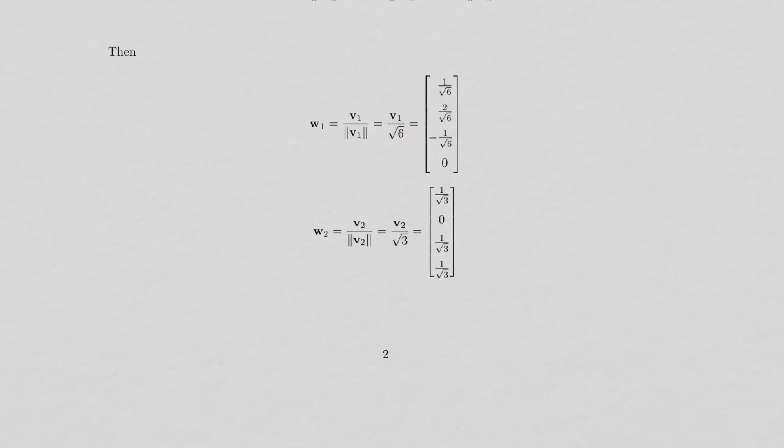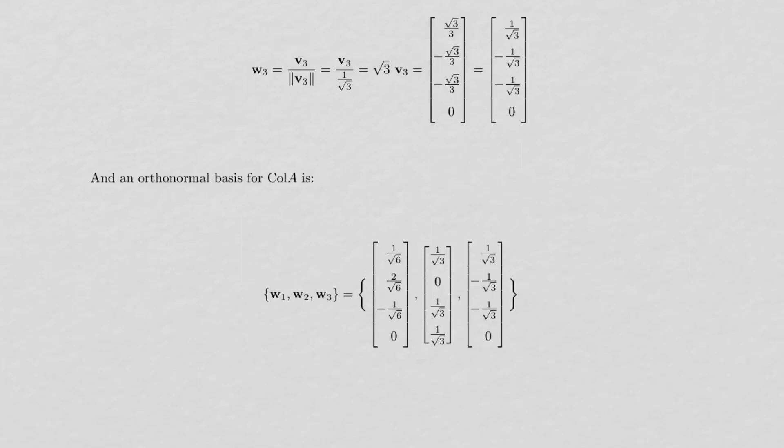So here's w1, w2, and w3 here. So the norm of v3 is 1 over root 3, so we end up multiplying by root 3. And here is my orthonormal basis for the column space of A.